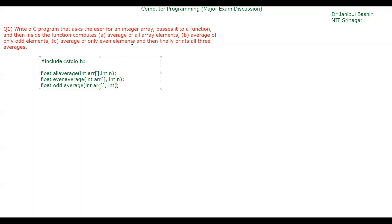The names of the three functions are: float all_average, float even_average, and float odd_average. Each will return a float value because average can be a float. all_average returns the average of all elements, even_average returns the average of even numbers, and odd_average returns the average of odd numbers.